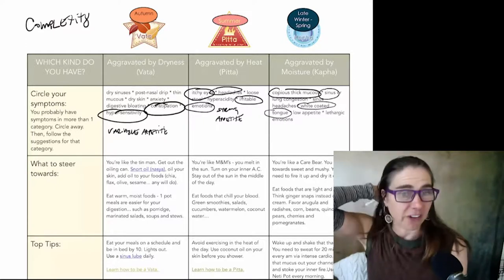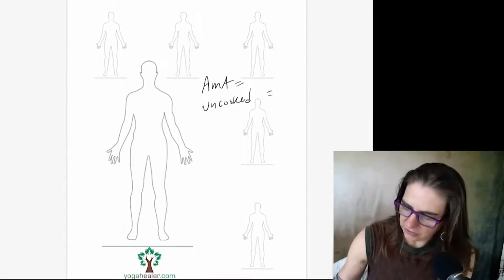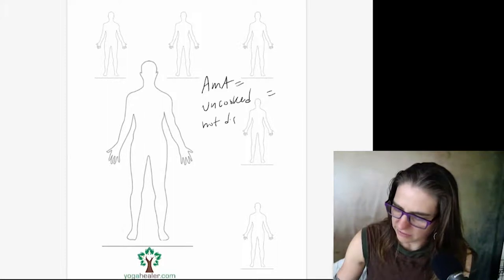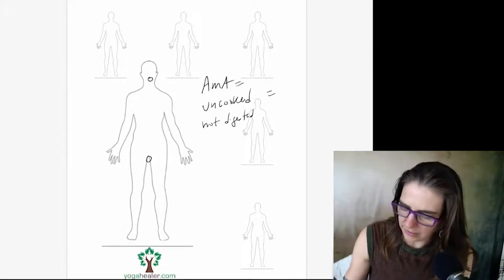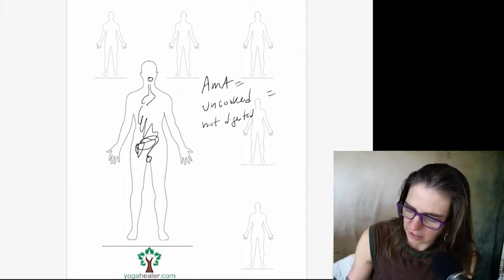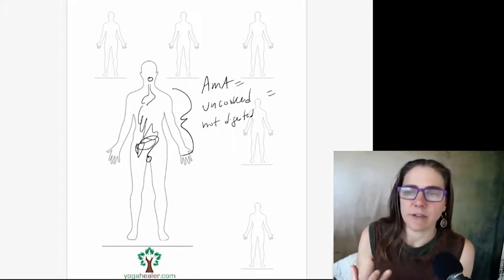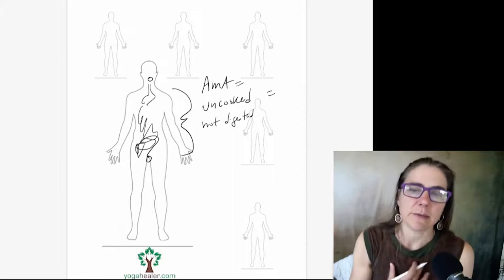And now what I want to talk about is another concept, which is called AMA. AMA means that which is uncooked in the body. AMA is also that which is not digested. So it's that which has not been metabolized. So there's the two holes of the body. There's the great channel of the stomach, of the small intestines and of the colon. So if we're not completely digesting, absorbing and eliminating, then what happens is there's a buildup of AMA, of that which is undigested. And this was the case for me.